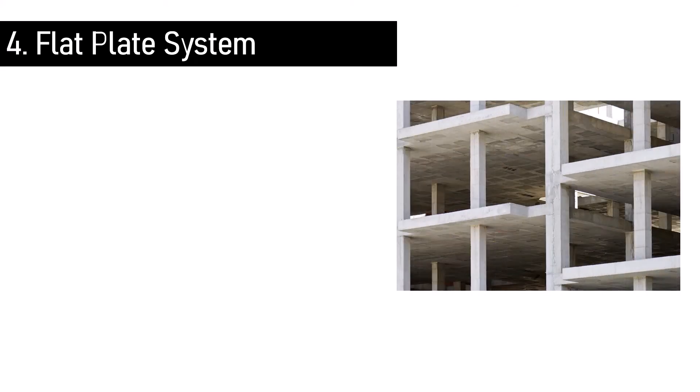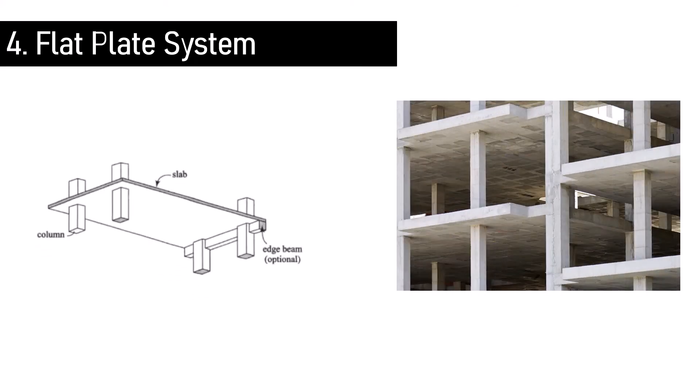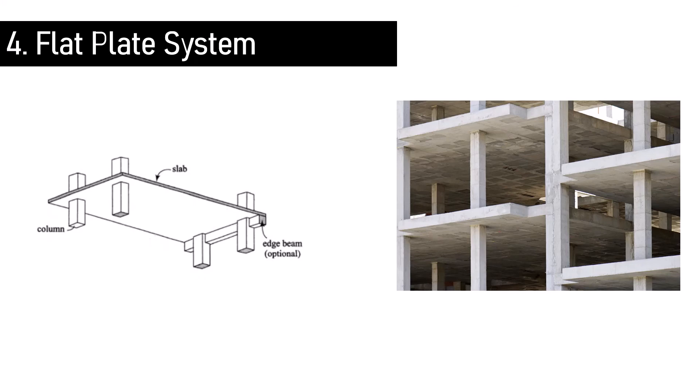Flat plate system. In this system, the floor slab is supported directly on the columns without using stiffening beams, except at their peripheries, as shown.